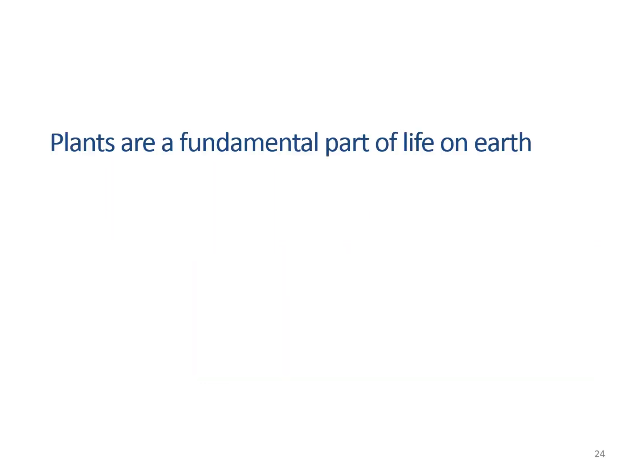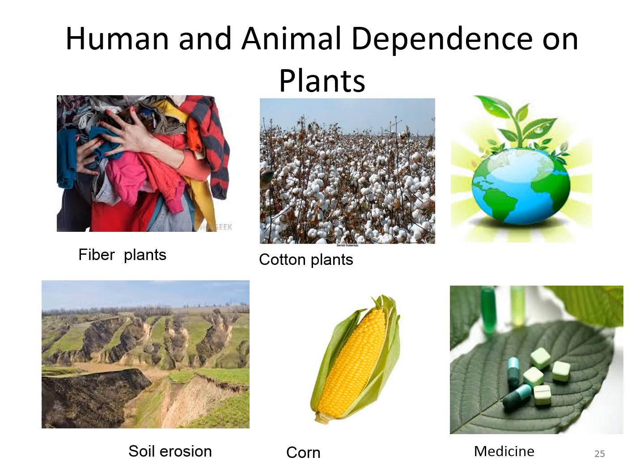Plants are a fundamental part of life on earth. Humans and animals all depend on plants because plants generate oxygen, provide food, fiber, fuel, shelter, lumber, and timber, prevent soil from erosion, and provide medicines. Plants fulfill an important psychological need and allow humans and other life forms to exist.